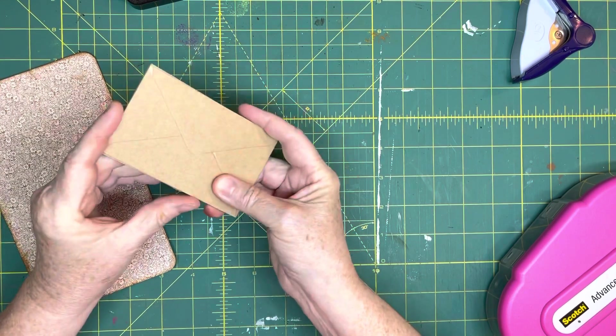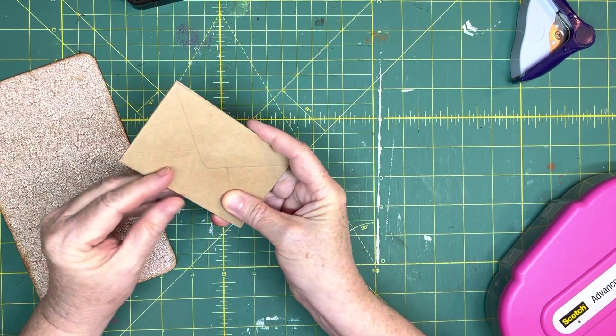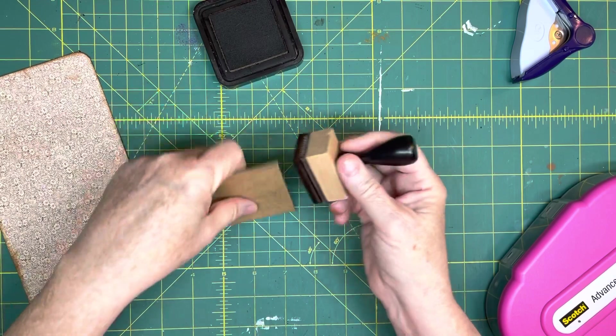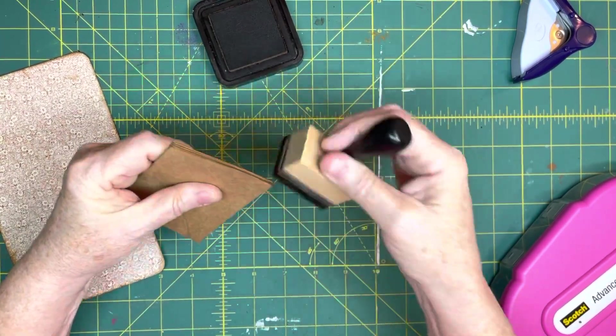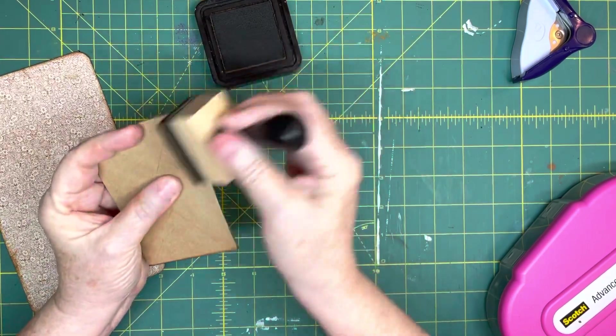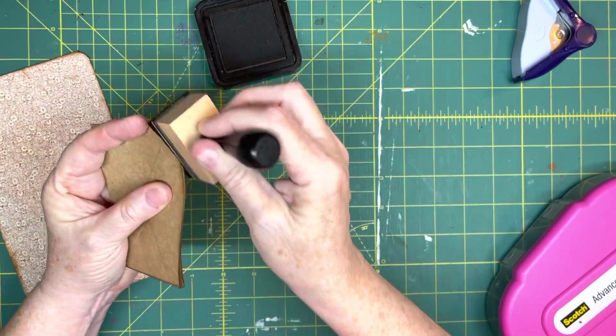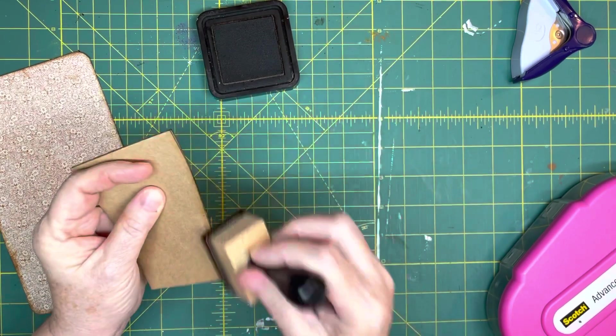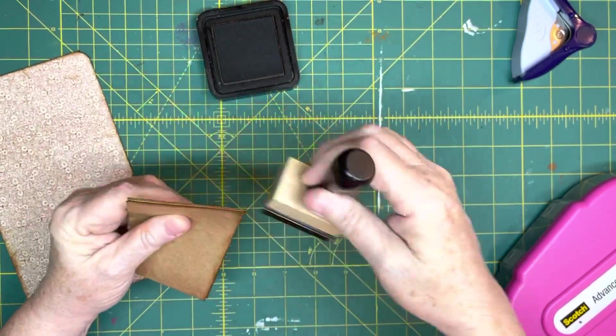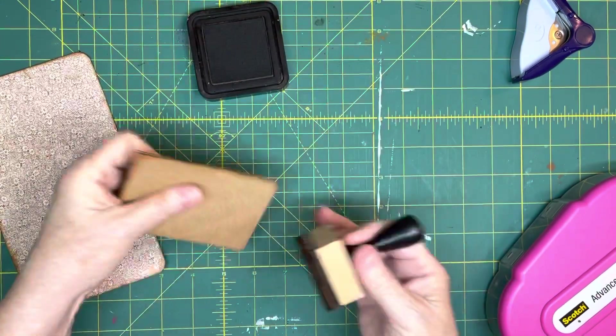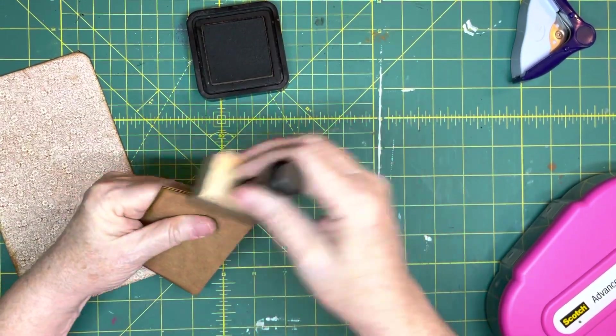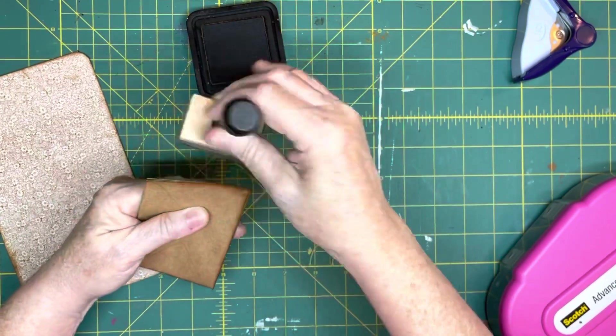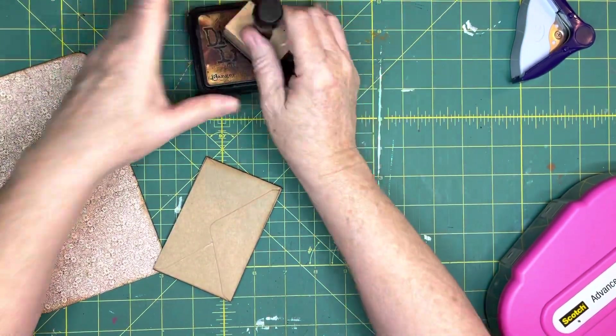Now if you want to ink these, now is the time to do it because once you get them in the little wallet, it's hard to ink them. So what I usually do is I ink them on three sides: the top and then on this edge, on this back edge, on the side and along that edge. And you won't see a lot of this but it just kind of makes them look nice, just kind of makes them look interesting. I like it.